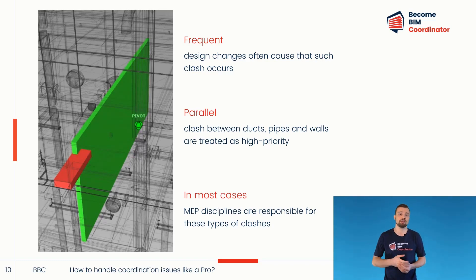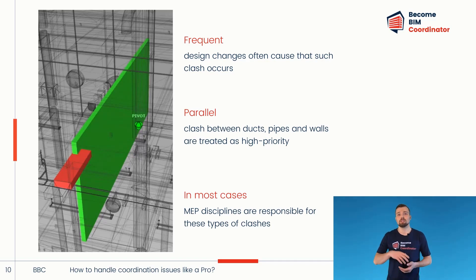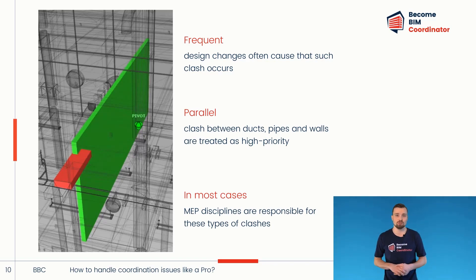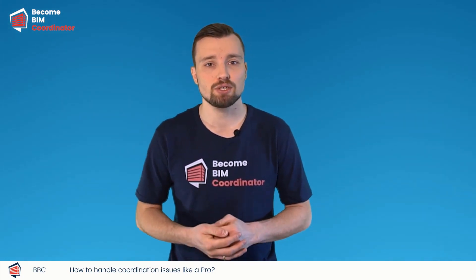The MEP industry is responsible for these issues and needs to change the position of the duct so it doesn't collide with the wall. However, when large-sized ducts and pipes collide with partition walls, it may be faster and cheaper to move the lightweight partition wall and leave the duct as is. These individual cases should be discussed internally between disciplines. I have now shown you some examples of clashes that are often considered high priority, selected by the BIM coordinator and presented during coordination meetings.